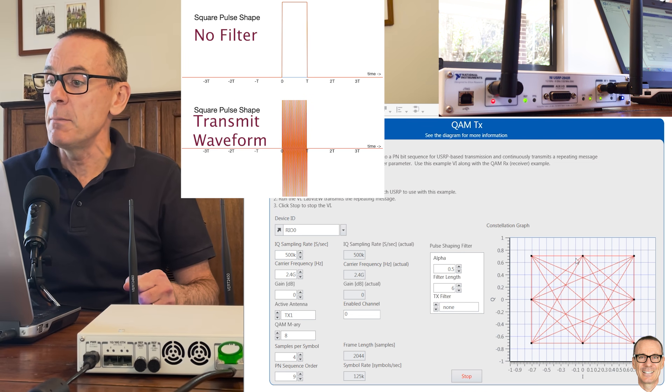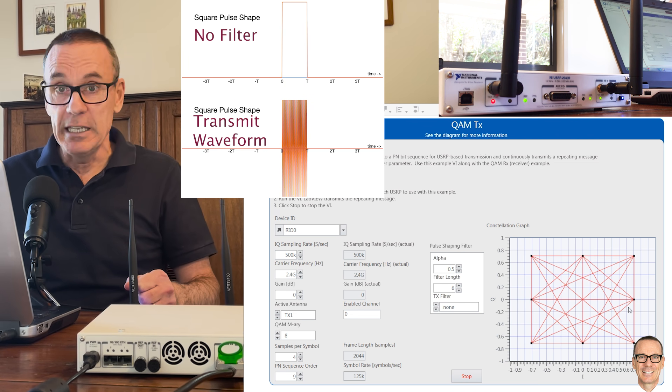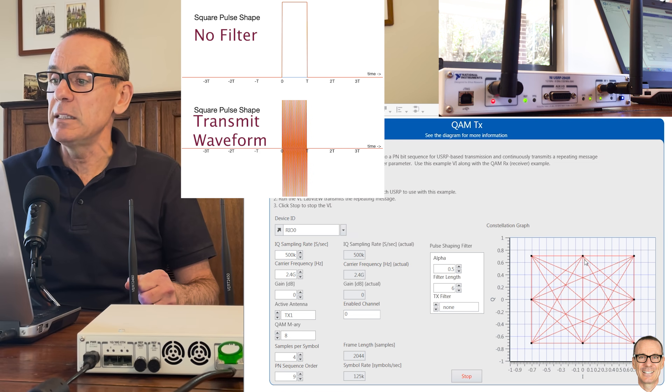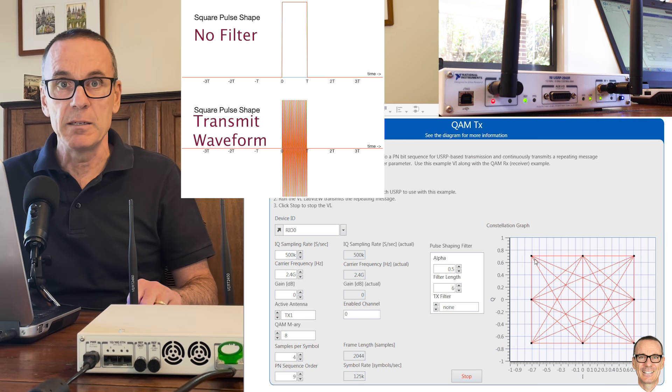And what we can see here is we are not using any transmit filter. And the constellation diagram is very clean.